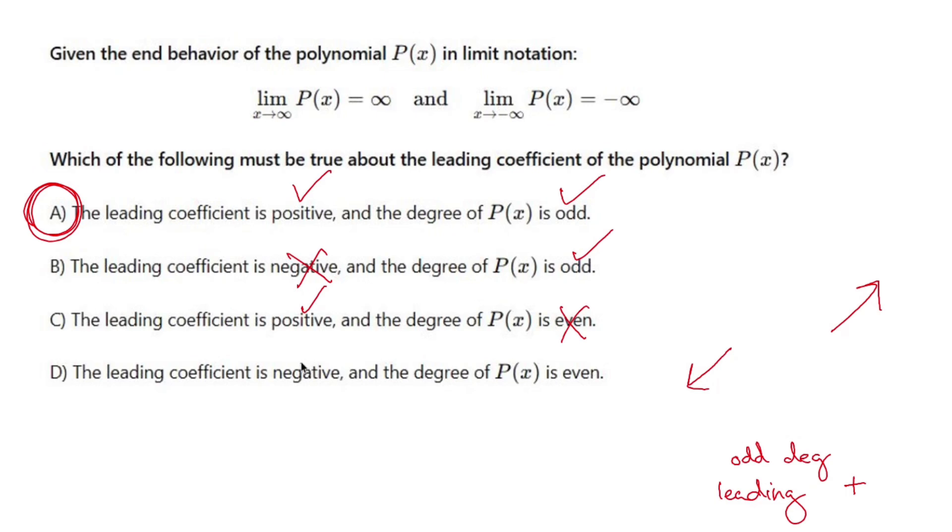The leading coefficient is negative. Nope. And it's even. Nope. Nope. So of course A right off the bat works and that's the one that we want.